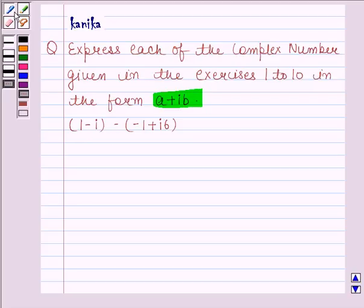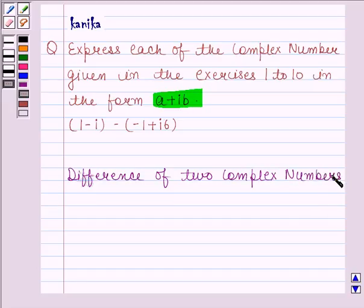Before solving this question, let's first understand how to find the difference of two complex numbers. If Z1 is equal to a plus ib and Z2 is equal to c plus id are any two complex numbers,